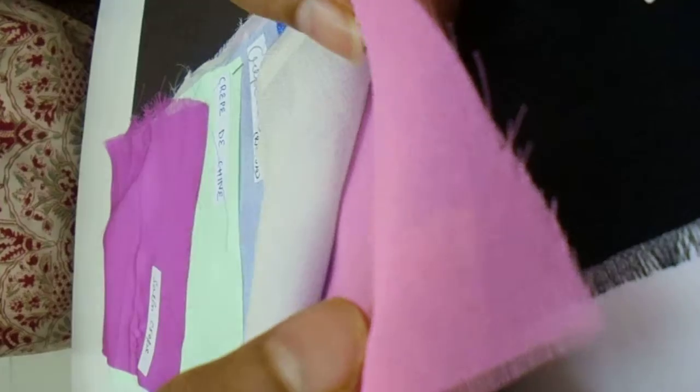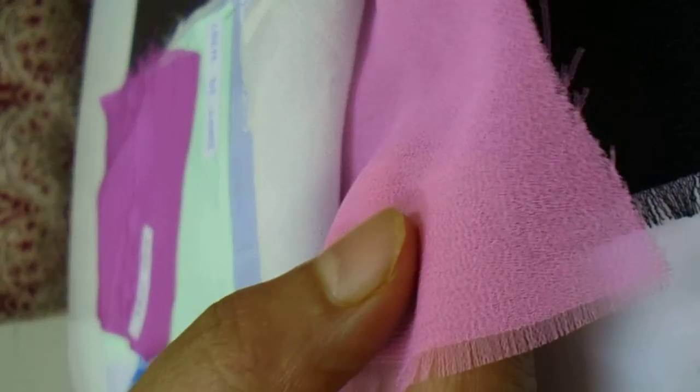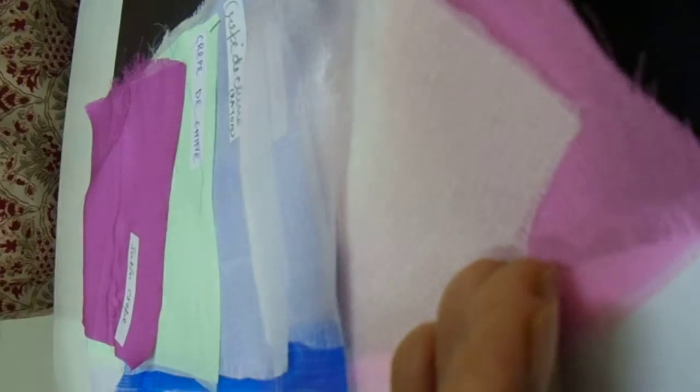The first fabric is moss crepe, which is rayon. The second fabric is georgette. Georgette can come in different fibers - this is a polyester georgette. You have a rayon georgette, you have a silk georgette. A silk georgette is a more expensive fabric.